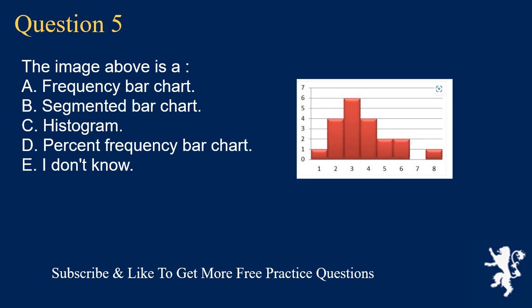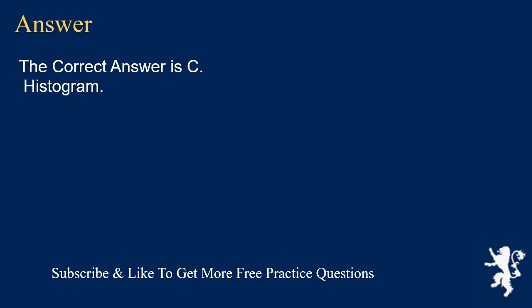Question 5: The image above is A. a frequency bar chart, B. segmented bar chart, C. histogram, D. percent frequency bar chart, E. I don't know. The correct answer is C, histogram.